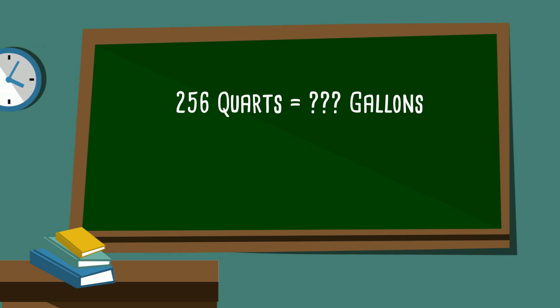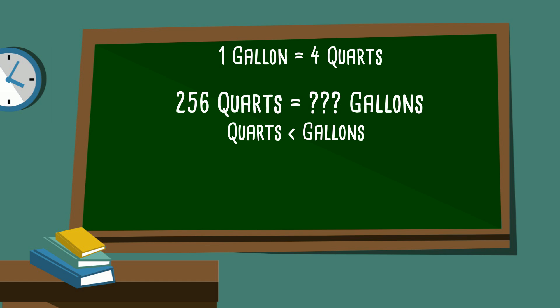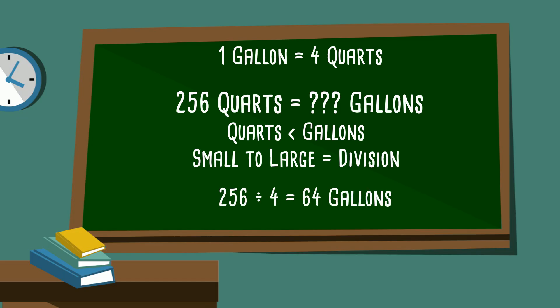256 quarts equals how many gallons? The hint: one gallon equals four quarts. Quarts is smaller than gallons, so we're going from small to large, so we will divide. 256 divided by four gives you 64 gallons.